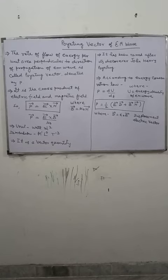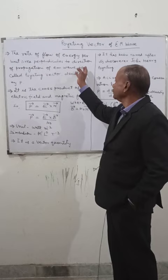Poynting vector of electromagnetic wave. The rate of flow of energy per unit area perpendicular to the direction of propagation of the electromagnetic wave is called the Poynting vector, denoted by P.